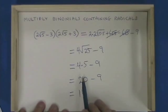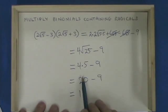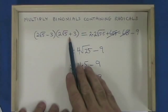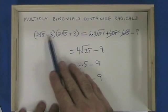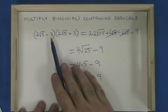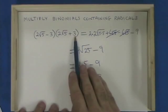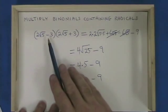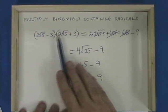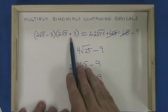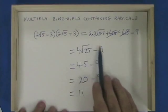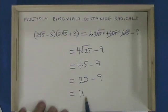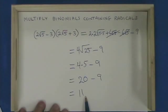It's interesting because this looks like the answer to a difference of squares — the first terms are the same, the last terms are the same, and one of the binomials has a minus and the other has a plus. It's also interesting to note that the final answer is 11 and does not have a radical in it.